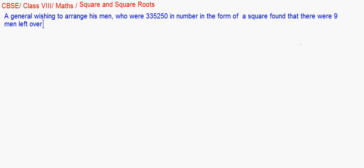So how many were there in each row? When he arranged them in a square, the number of men in the row and column would remain the same.